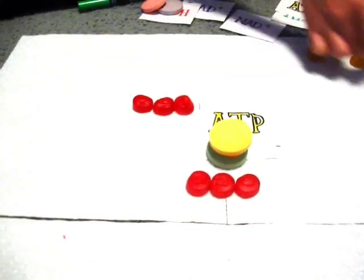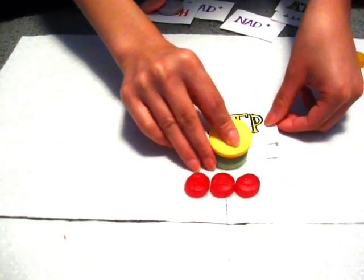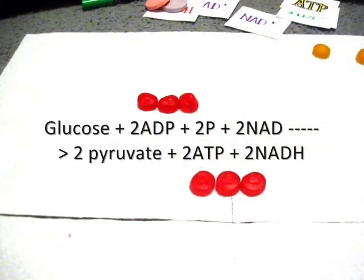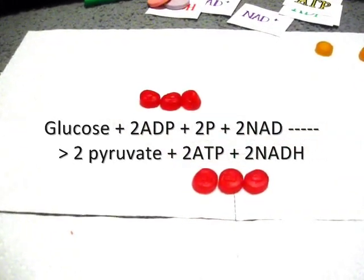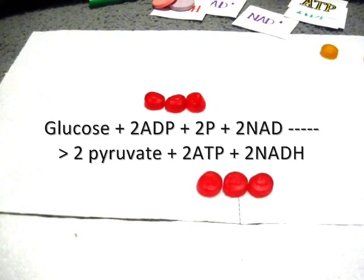All in all, glycolysis spent two ATP during kickstart and generated four ATP for a net ATP of two. It also formed two NADH molecules.